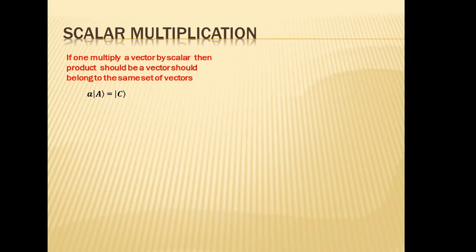As an example, consider the set of all positive 3D vectors — vectors whose components are all positive — with scalars being all real numbers. If I take the vector i-cap and multiply it by −1, I get −i-cap. Does −i-cap belong to the set of all positive vectors? No, it does not. So this set does not satisfy the scalar multiplication property and therefore is not a vector space.